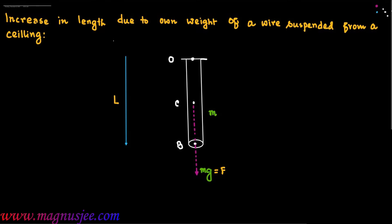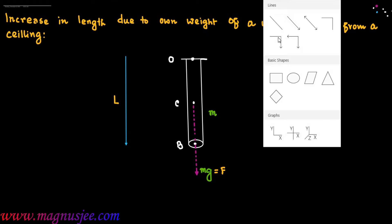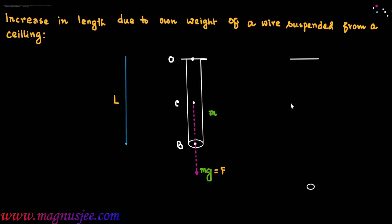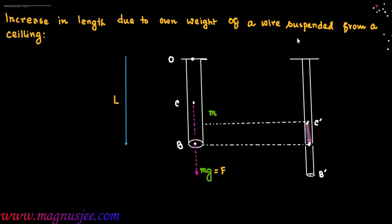In this case we denote the weight Mg as the deforming force F, so F equals Mg. We can now denote the deformed state of the wire, where B prime is the final position of the lowest point of the wire. The deforming force F equals Mg acts from the final position of the center of gravity, that is from point C prime.